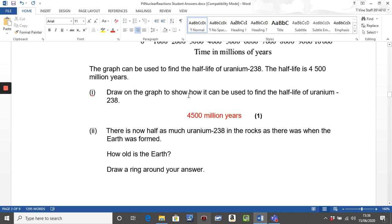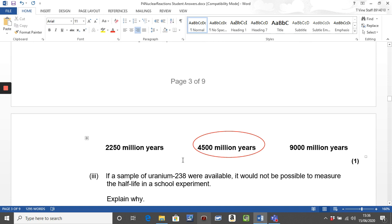And then it asks you apply that information. So we found out that the half-life of this uranium isotope is four and a half million years, or four and a half thousand million years. And then it goes on to say there is now half as much uranium in rocks as there were when the Earth was formed. So it's gone through a half-life. So it's four and a half thousand million years old.